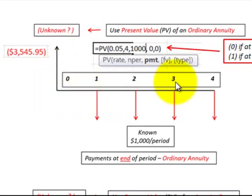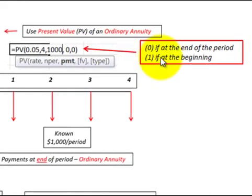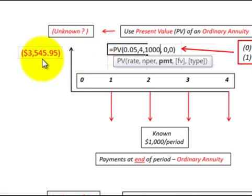Here we're going to solve for the present value of an ordinary annuity. An ordinary annuity has equal payments at the end of each period. We want to discount those known amounts back to determine their present value at the beginning of year one. We use the present value function in Excel — put in the interest rate, number of periods, and the payment amount. There's no future value. Critically, since payments are at the end of the period, you put a zero in for the type argument. Solving this, you come up with $3,545 — that's what these four equal payments are worth discounted back to the beginning of year one.